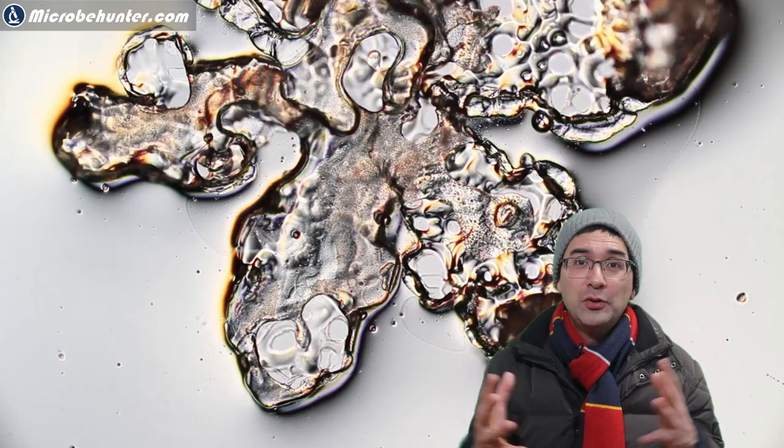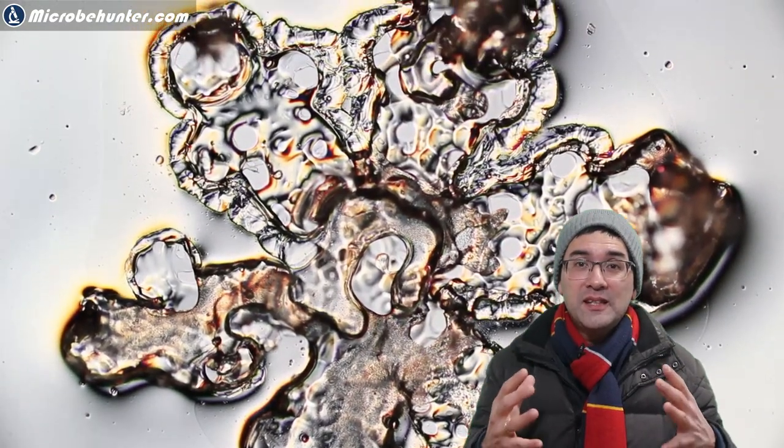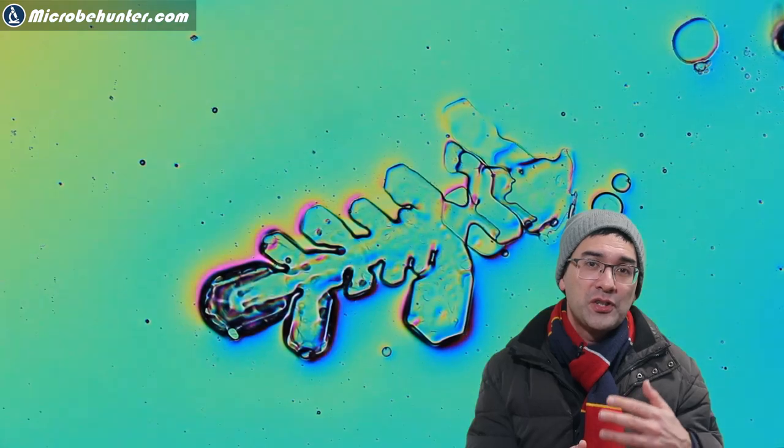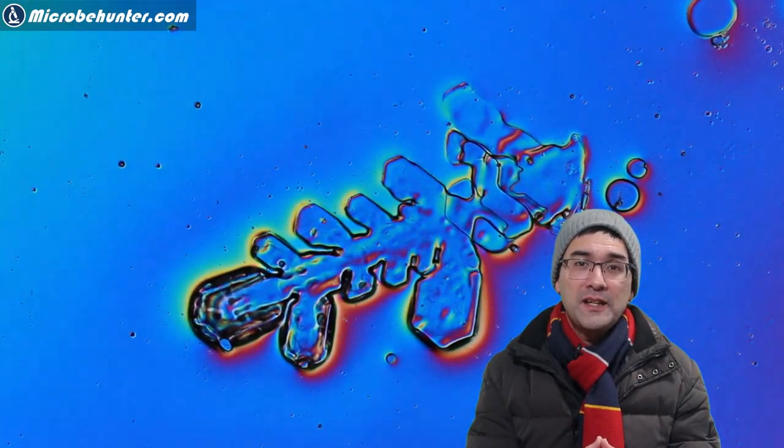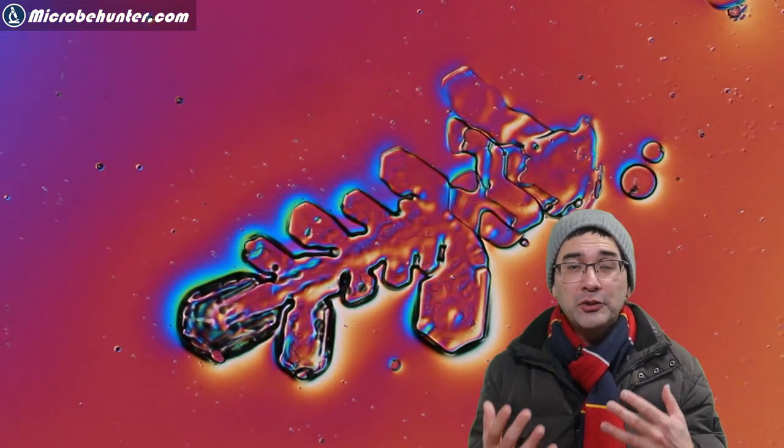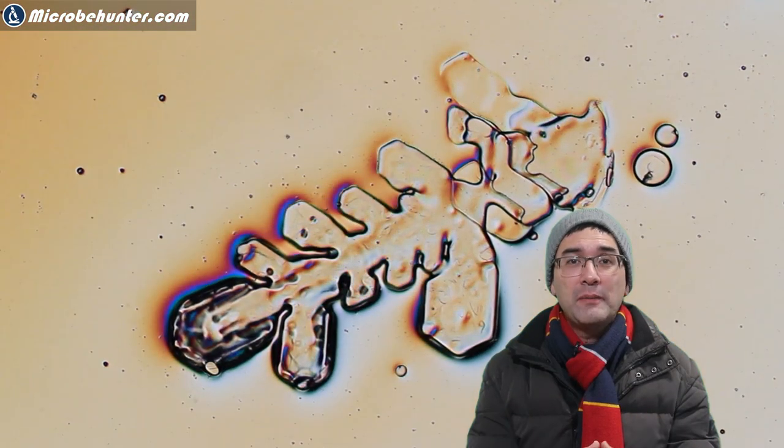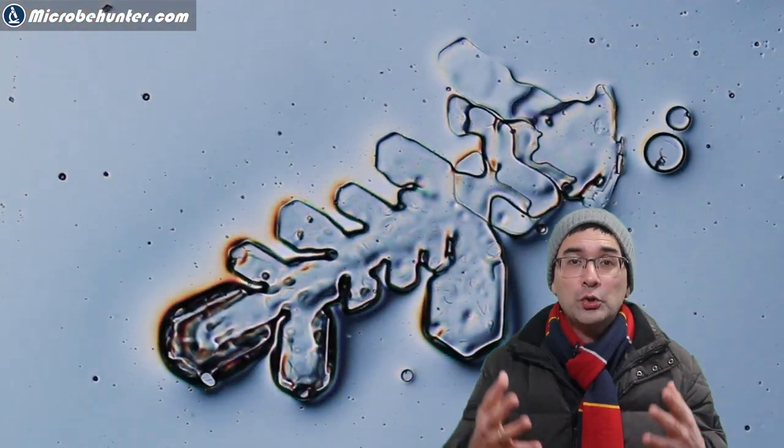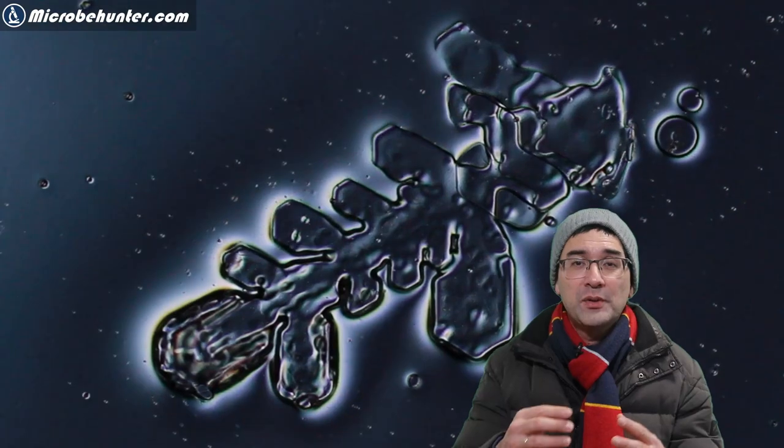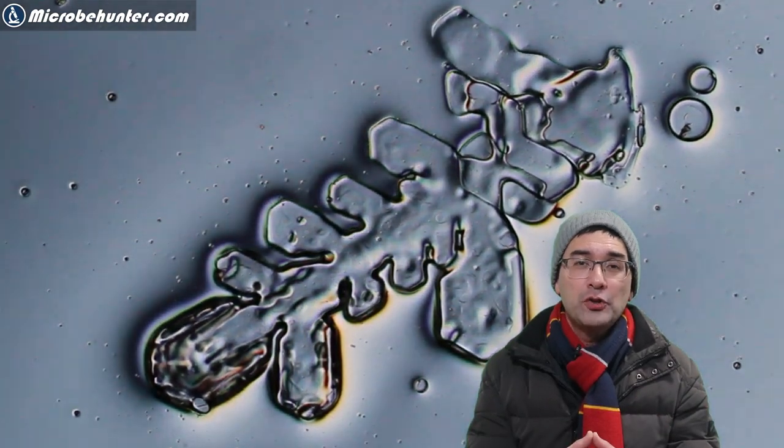But occasionally I do see a hexagonal, a six-shaped snowflake and sometimes I also saw some of these parts of the snowflakes. Now if you're kind of wondering a little bit about the colors, this is because I used polarized light to look at the snowflakes and I was actually rotating the polarization filters.